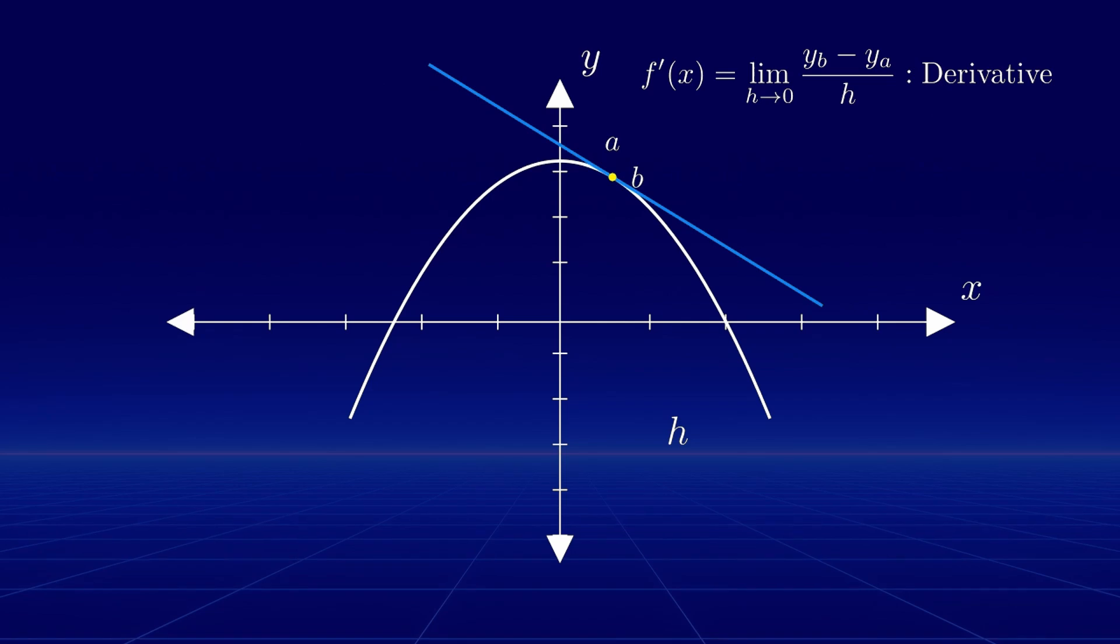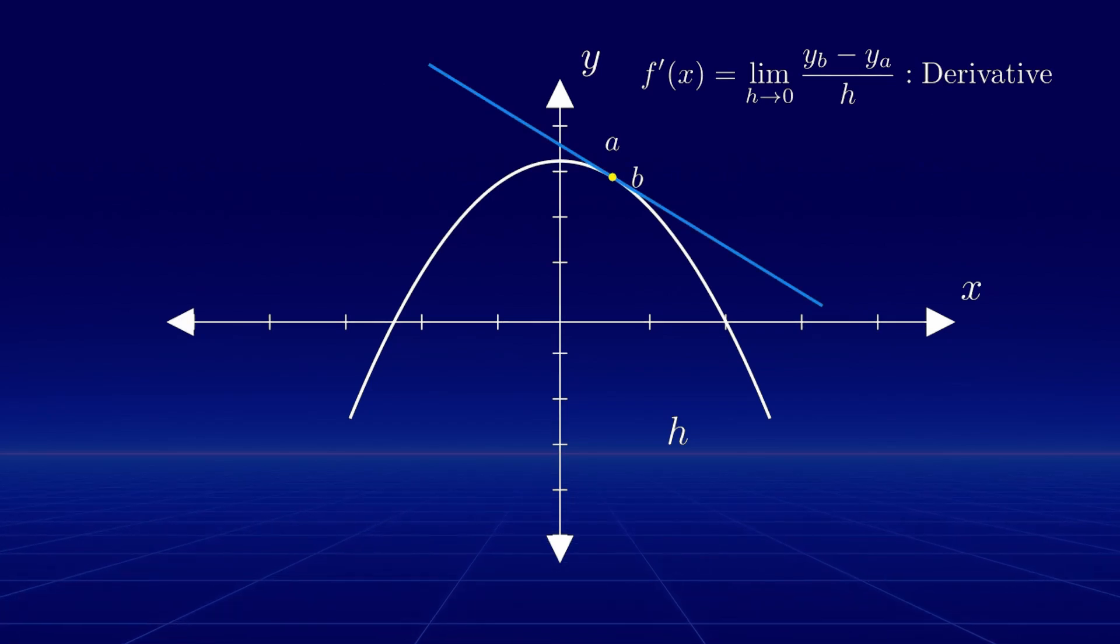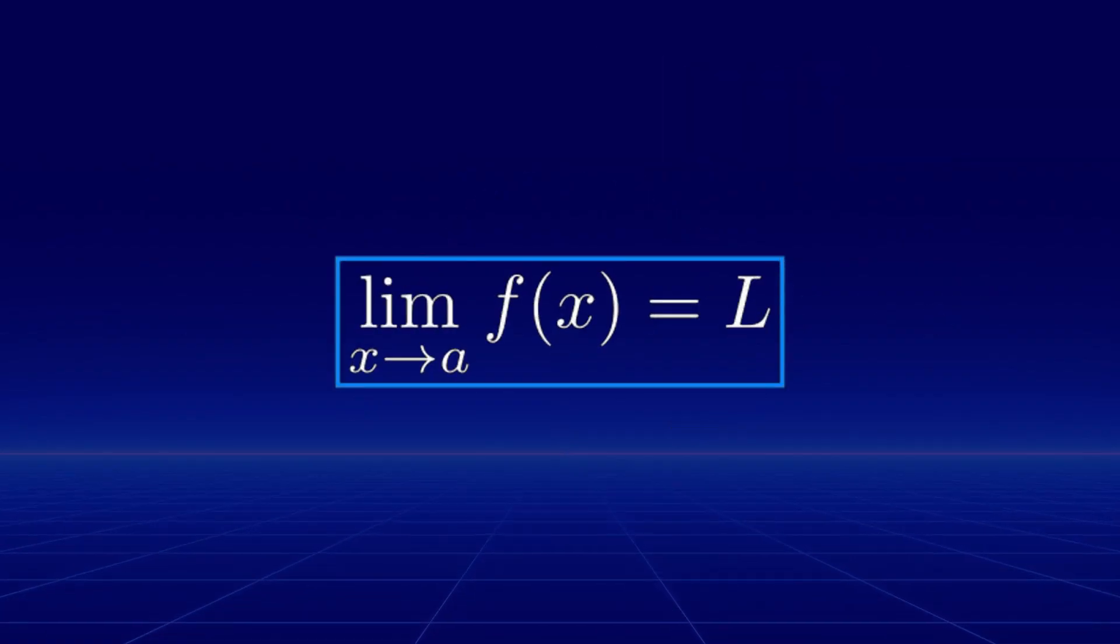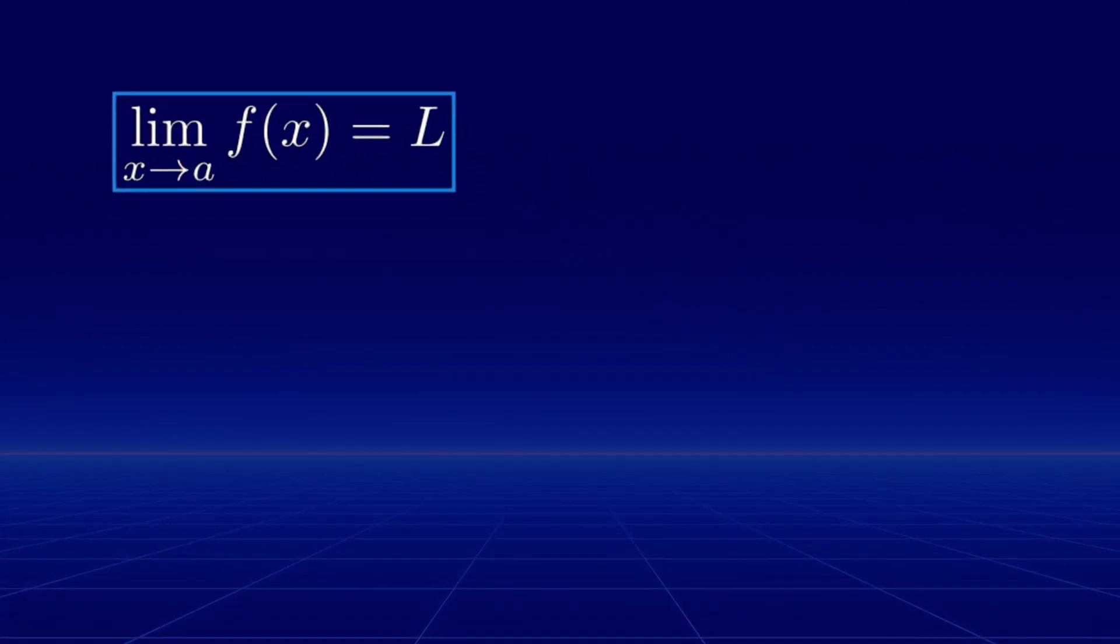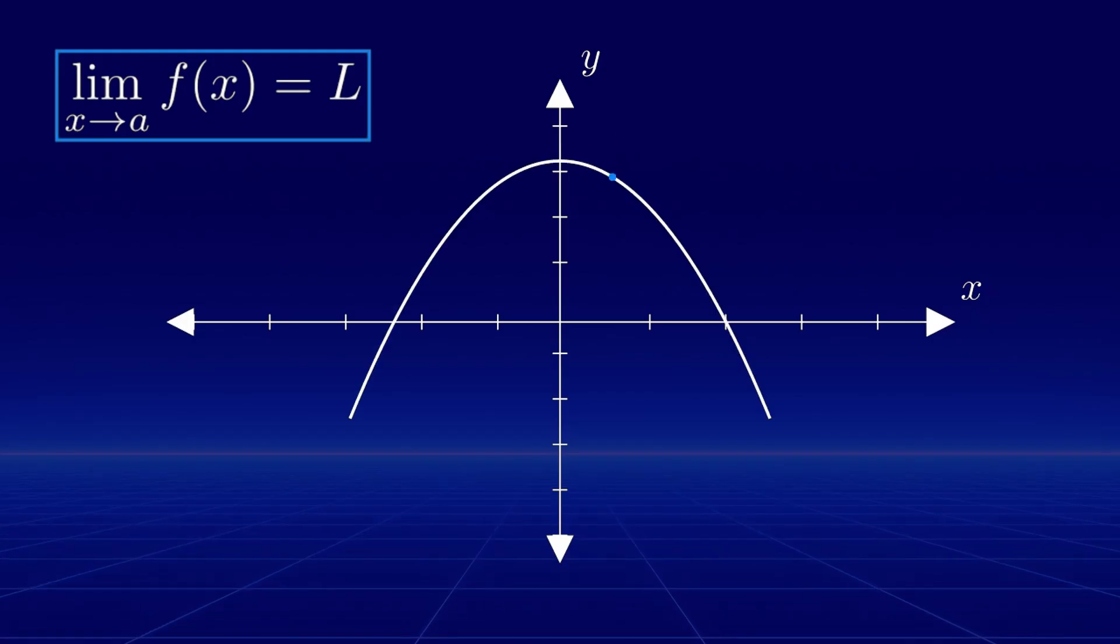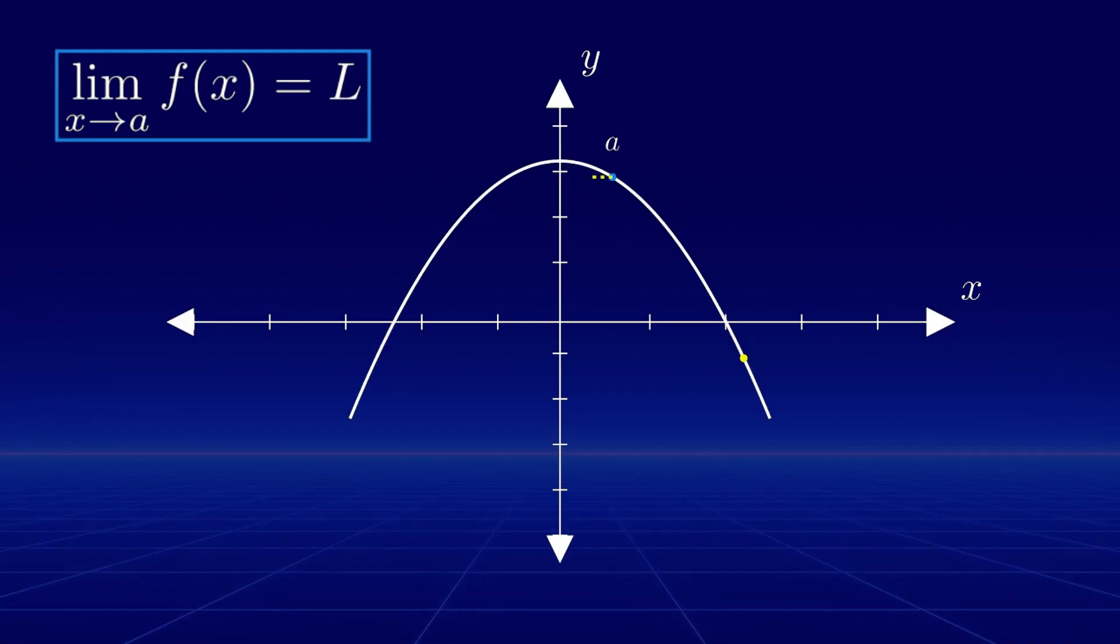Mathematically, a limit describes the value a function approaches as the input approaches a specific point. For example, to express that the function f approaches a value L as x approaches a, we use the following notation. This notation tells us that as x gets closer and closer to a, the function f gets closer and closer to L.